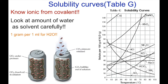When working with solubility curves, we have to take into consideration what type of compound we're dealing with — we must know whether the compound is ionic or covalent. We must also look at the amount of solvent in terms of water we're using. On the graph's y-axis, we're using 100 grams or 100 mLs, because the density of water is 1 gram per 1 mL.